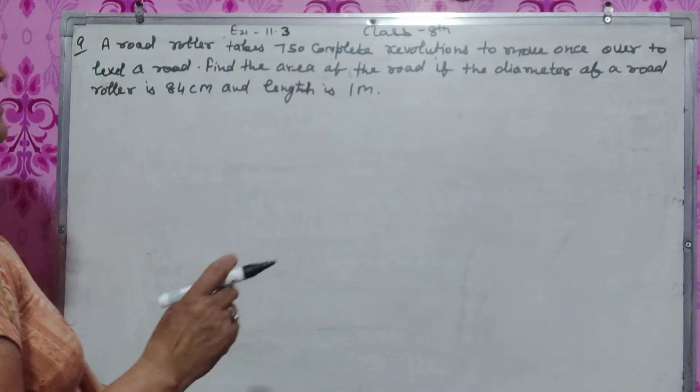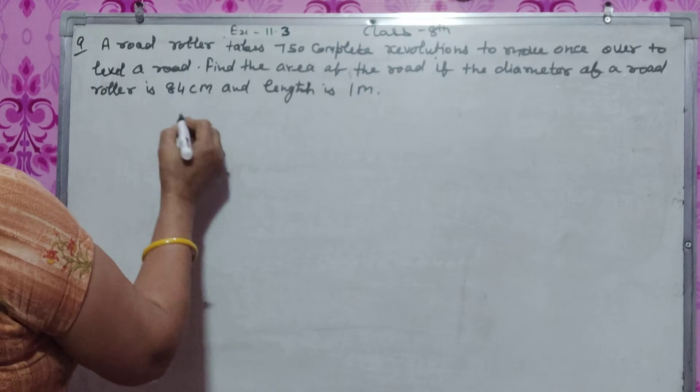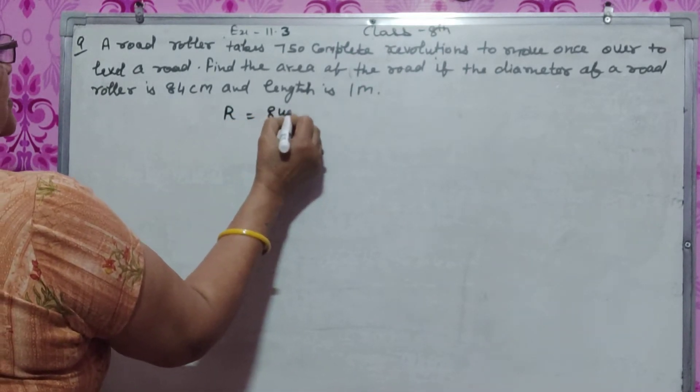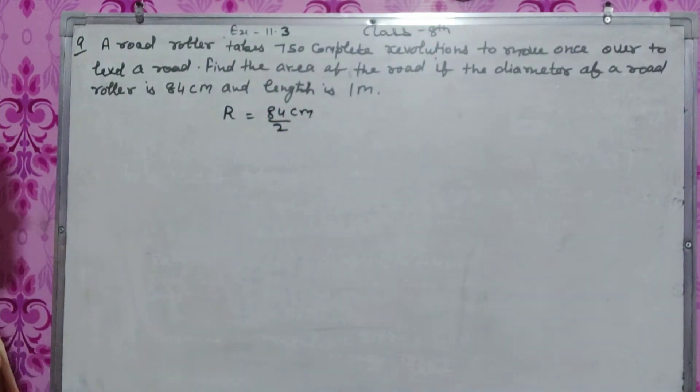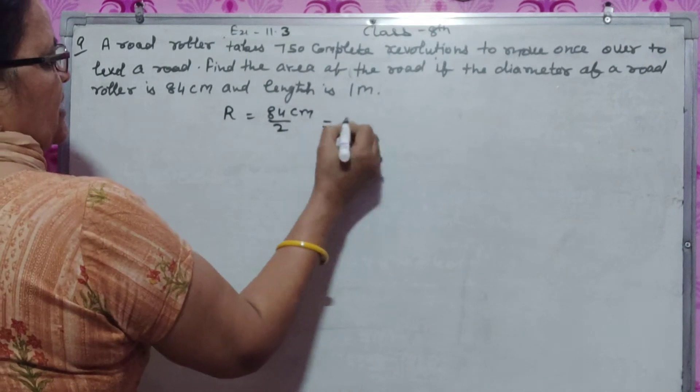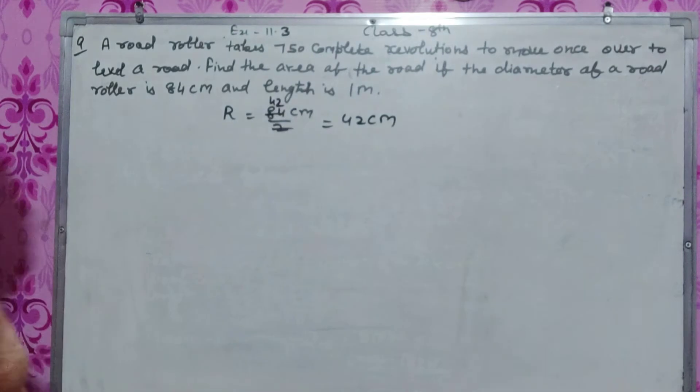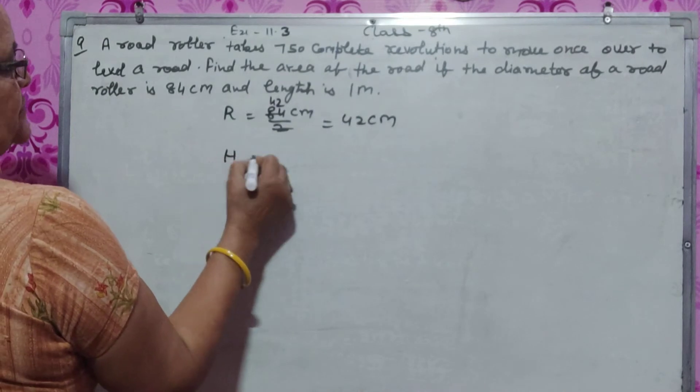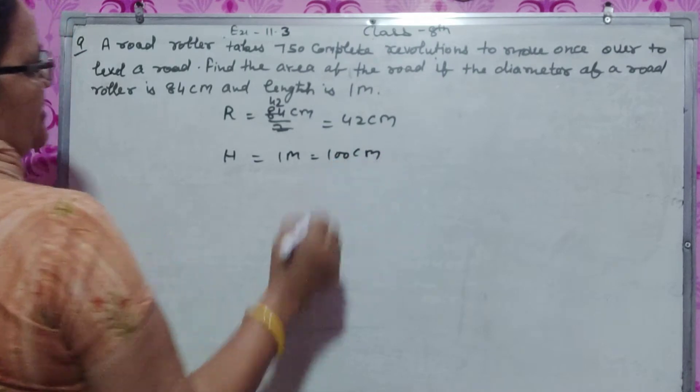The roller is cylindrical in shape. For a cylinder, we need the radius. Radius equals diameter divided by 2, so 84 cm divided by 2 equals 42 cm. The height is 1 meter, which equals 100 cm.